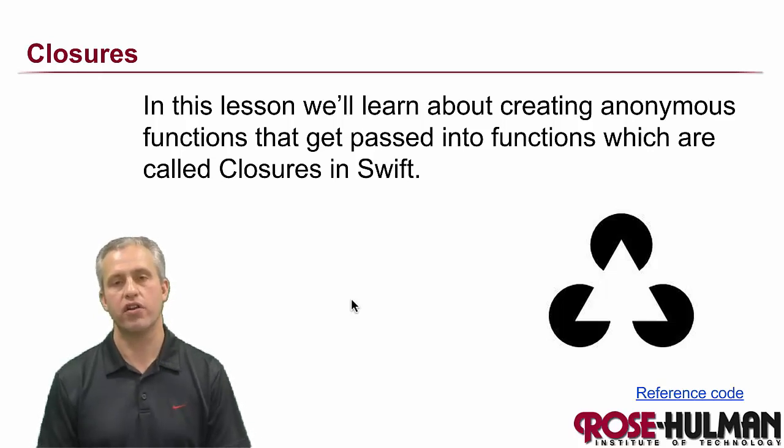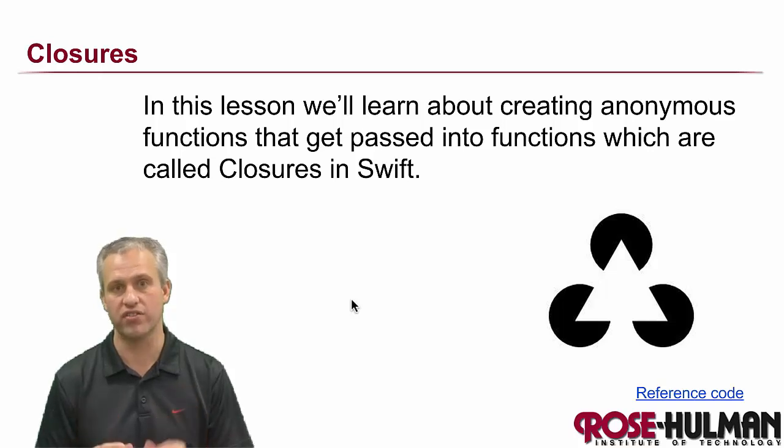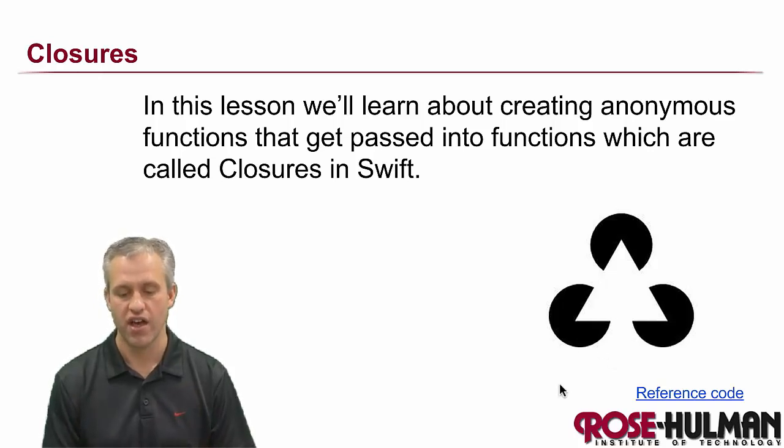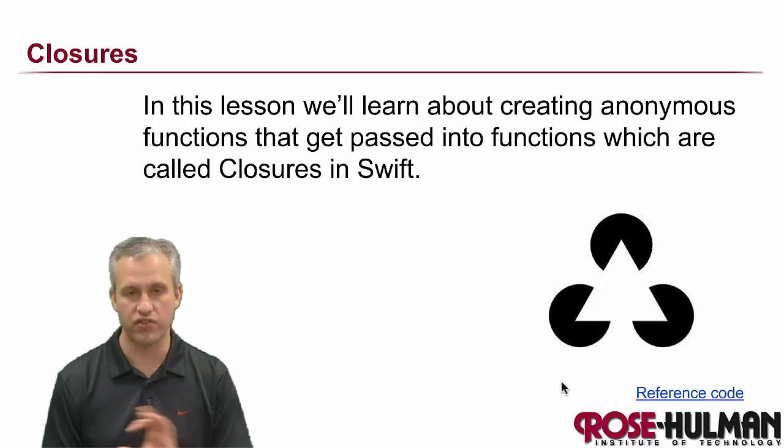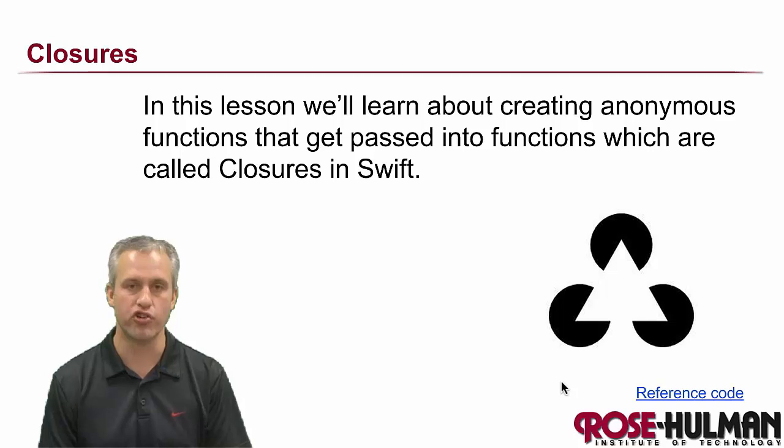All right, so welcome back. We're going to start talking about closures in Swift. My little example here of a closure - there's also a concept in art of a closure. It's where something doesn't exist, so this triangle doesn't exist, but your eye sees a triangle because of the circles with the pie shapes that are missing. So that's a closure in art.